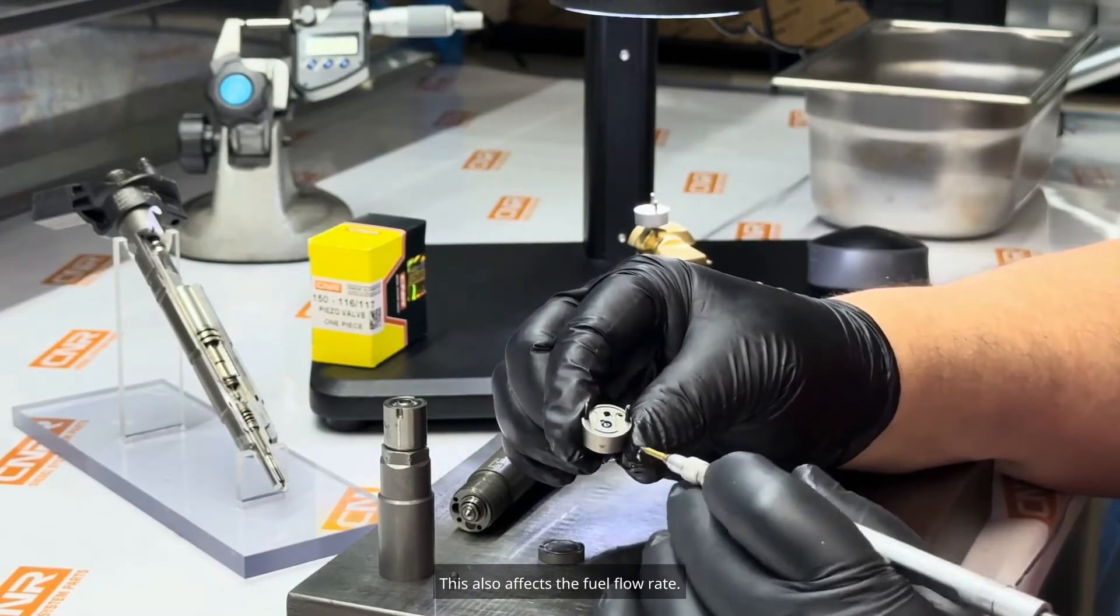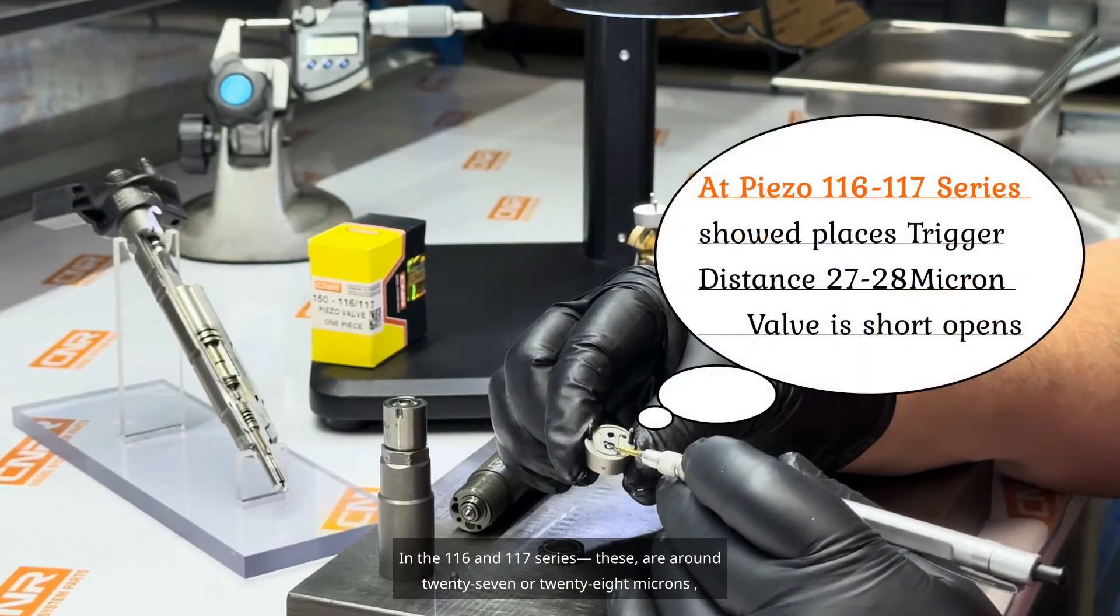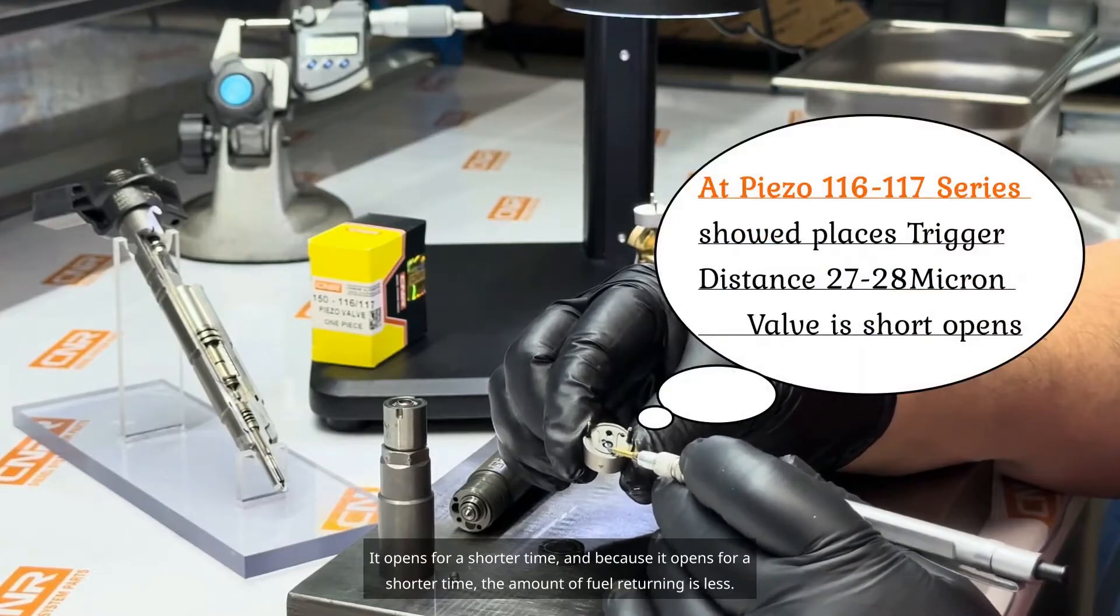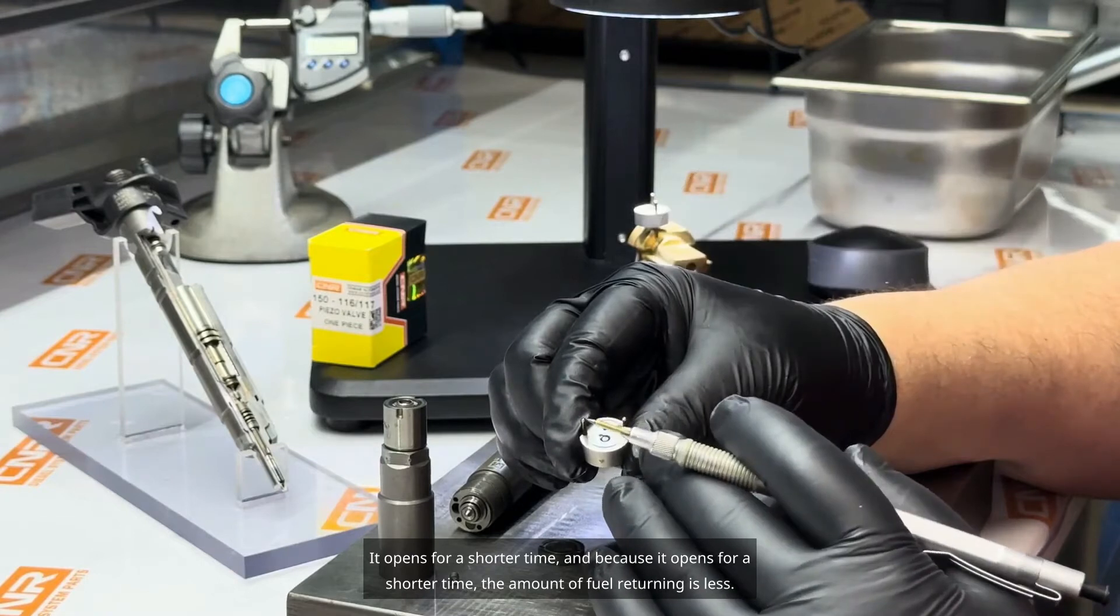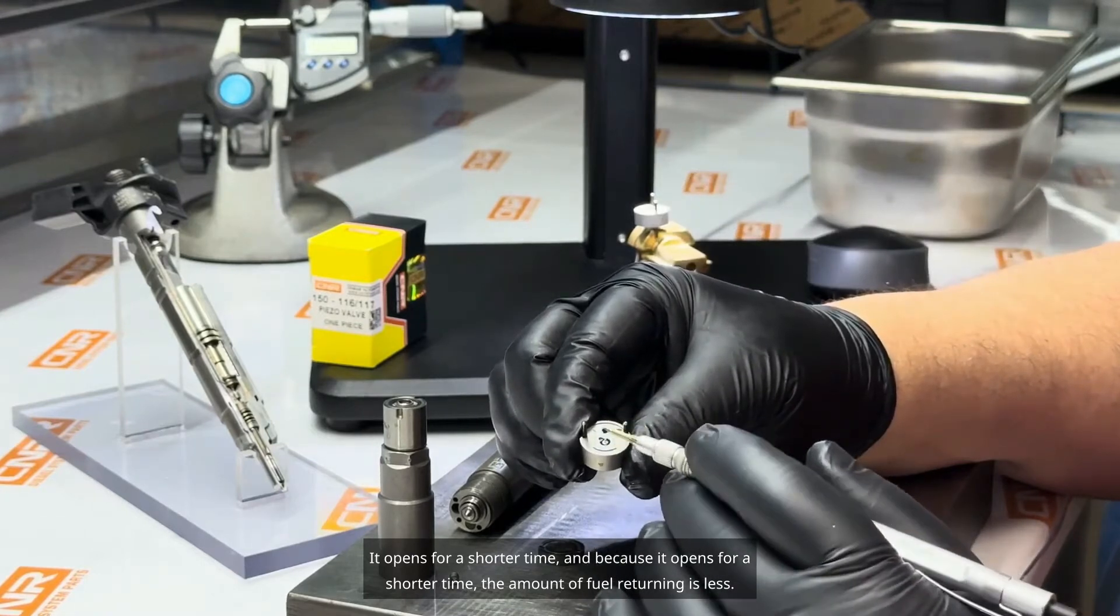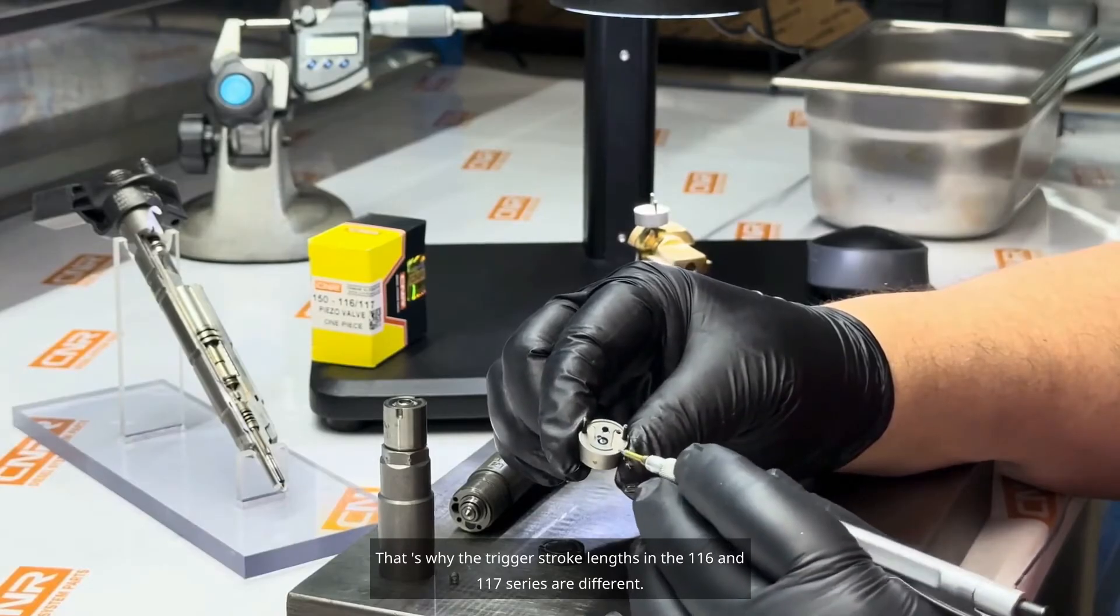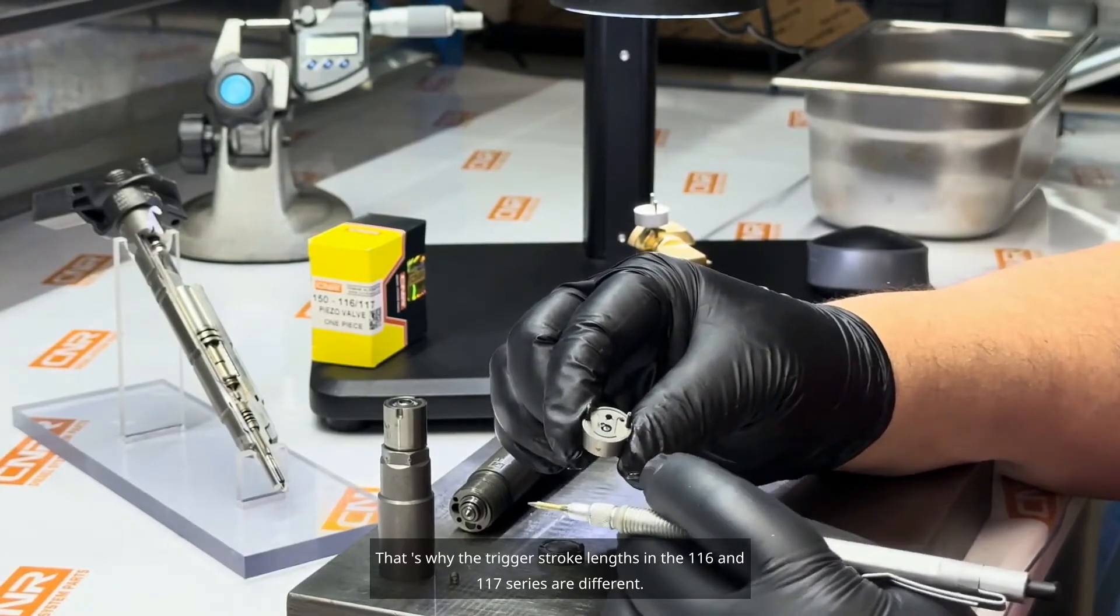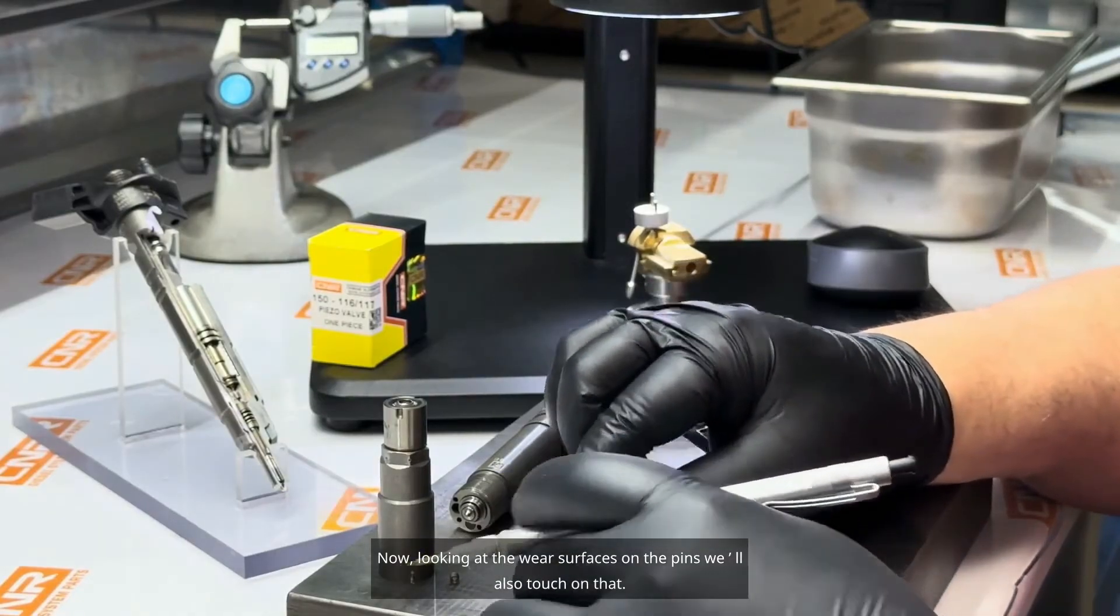In the 116 and 117 series, these are around 27 or 28 microns. It opens for a shorter time, and because it opens for a shorter time, the amount of fuel returning is less. It injects more fuel. That's why the trigger stroke lengths in the 116 and 117 series are different. Now, looking at the wear surfaces on the pins, we'll also touch on that.